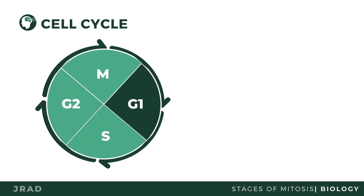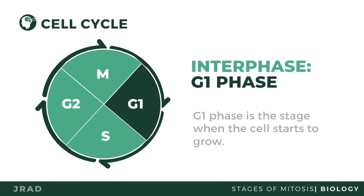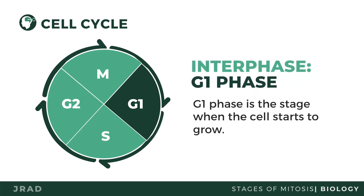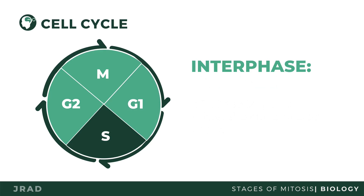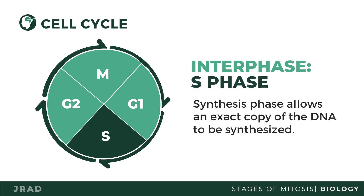The G phases were named as gap phases because no visible changes can be observed. At the G1 phase, the cell starts to grow — it is the longest sub-phase of the interphase, lasting about 10 hours. In the Synthesis phase, an exact copy of DNA is synthesized.